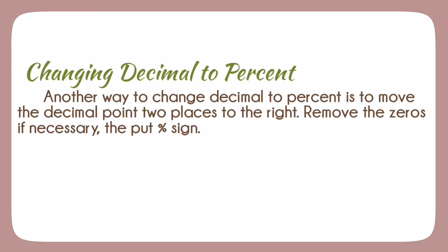Another way to change decimal to percent is to move the decimal point two places to the right. Remove the zero as the first number, if necessary, then put percent sign. Examples.